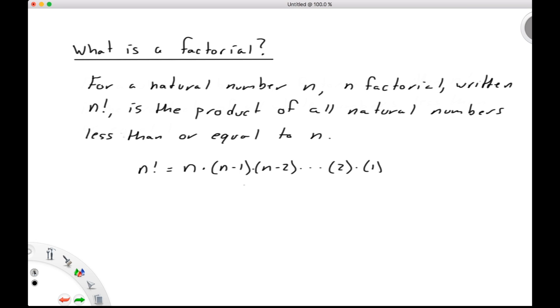So we take the product of all of the natural numbers that are less than or equal to n. For example, we would say 4 factorial is equal to 4 times 3 times 2 times 1. We would say 7 factorial is equal to 7 times 6 times 5 times 4 times 3 times 2 times 1. We would say 120 factorial is equal to 120 times 119 times 118 and so on and so forth times 2 times 1. That would be true for however large of a natural number that we chose, and also however small. Even 2 factorial would just simply be 2 times 1, or 2, and 1 factorial would just be 1, just itself.